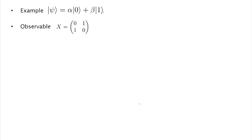Let's do an example. Say our state is alpha|0⟩ + beta|1⟩, a single qubit, and we use the observable X, which is the matrix [[0,1],[1,0]]. Note that X also happens to be a unitary gate, but it's also a Hermitian matrix. To do the measurement, we first ask: what are the eigenvectors and eigenvalues of X? The eigenvectors are |+⟩ and |−⟩ with corresponding eigenvalues +1 and −1.